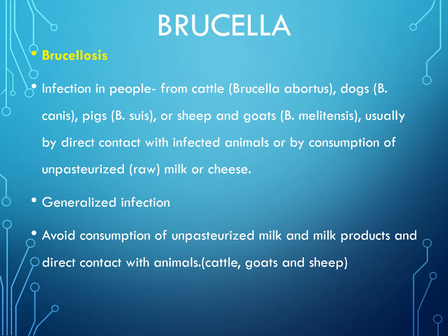Brucellosis manifests as malaise and may last for months if not treated adequately. Prevention involves avoiding consumption of unpasteurized milk and milk products, and preventing direct contact with infected cattle, goats, and sheep.